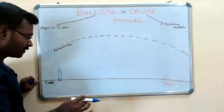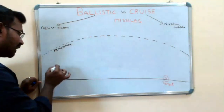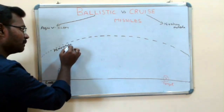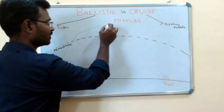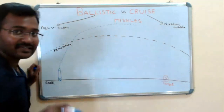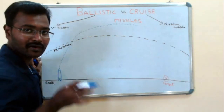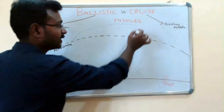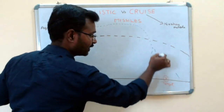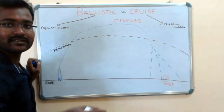So now we will take Ballistic Missile. Ballistic Missile — that's what we will launch. So when we launch a Ballistic Missile, it goes through the atmosphere. That's the point, that's gravity, and that's the target. So when we launch a Ballistic Missile to a target, it goes to the target.